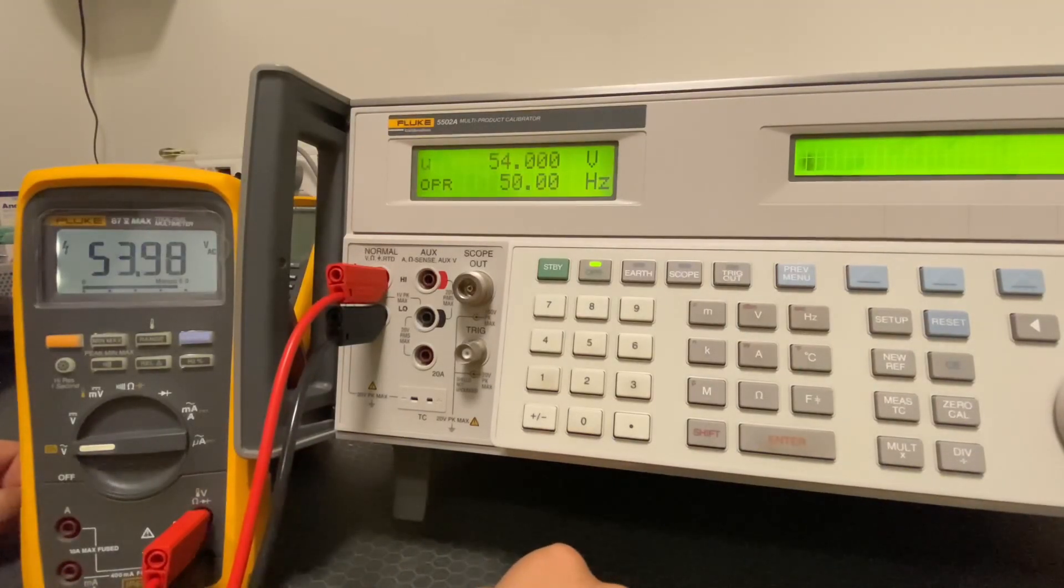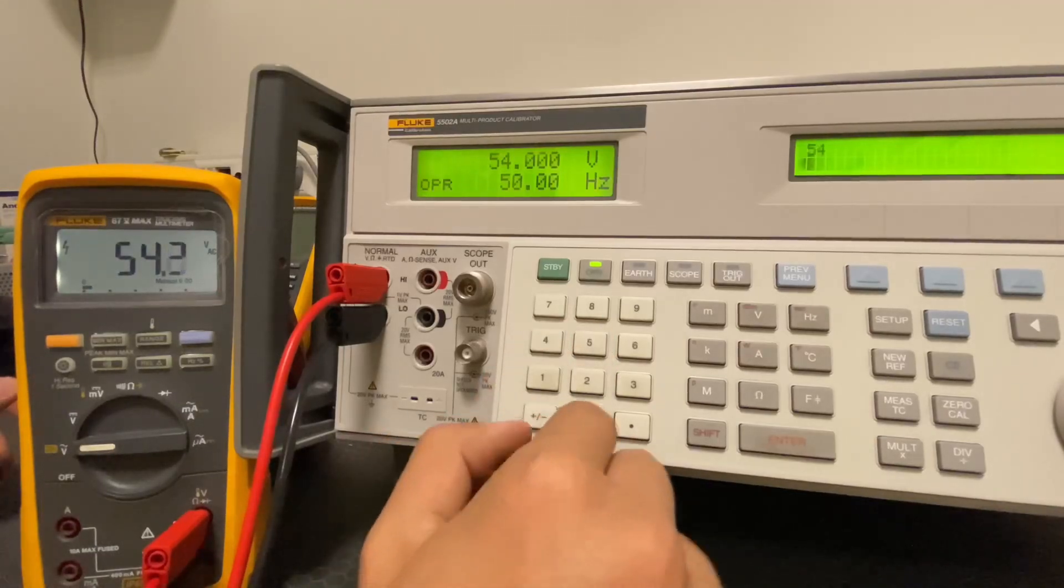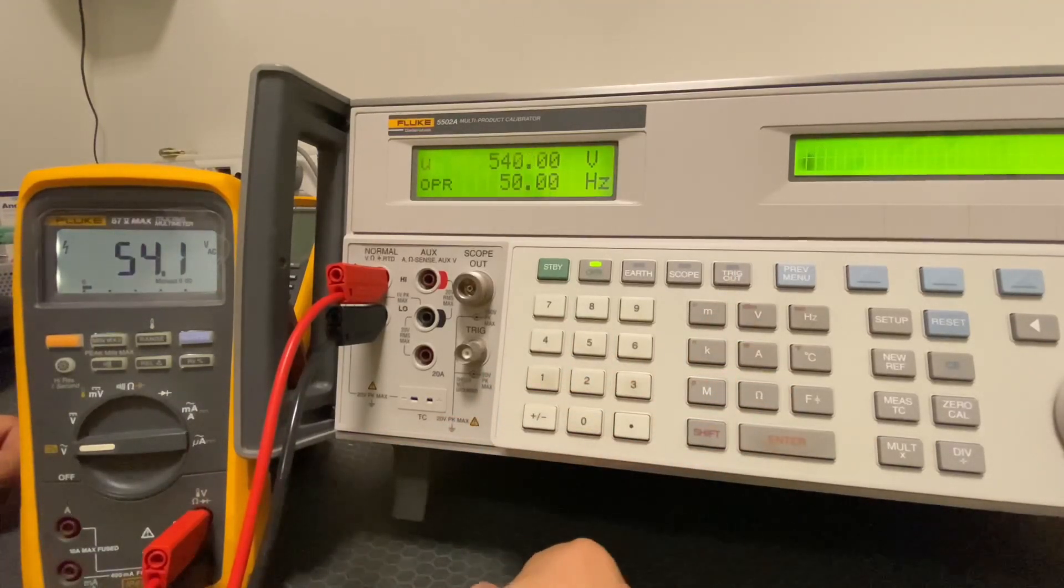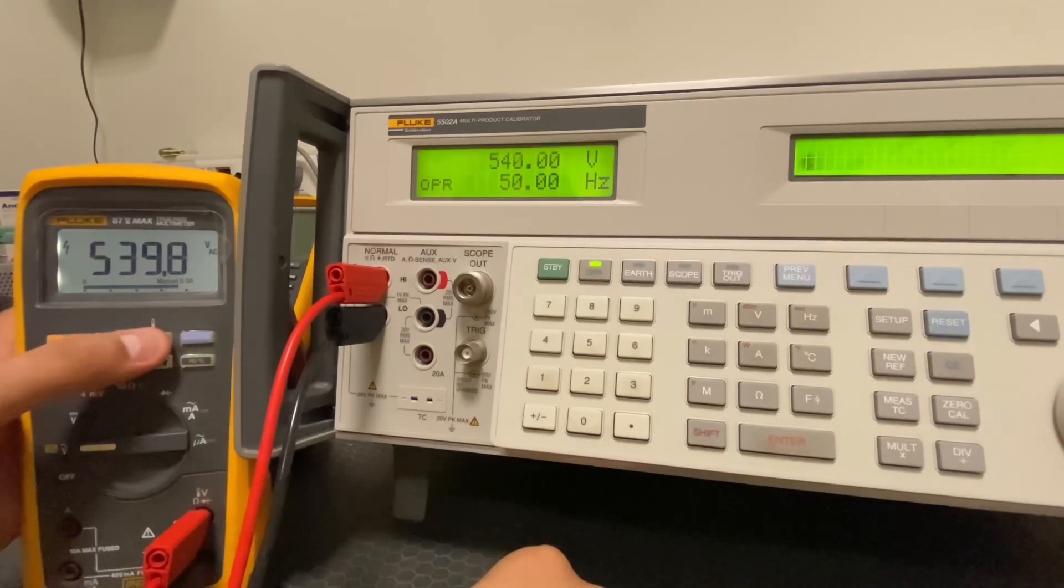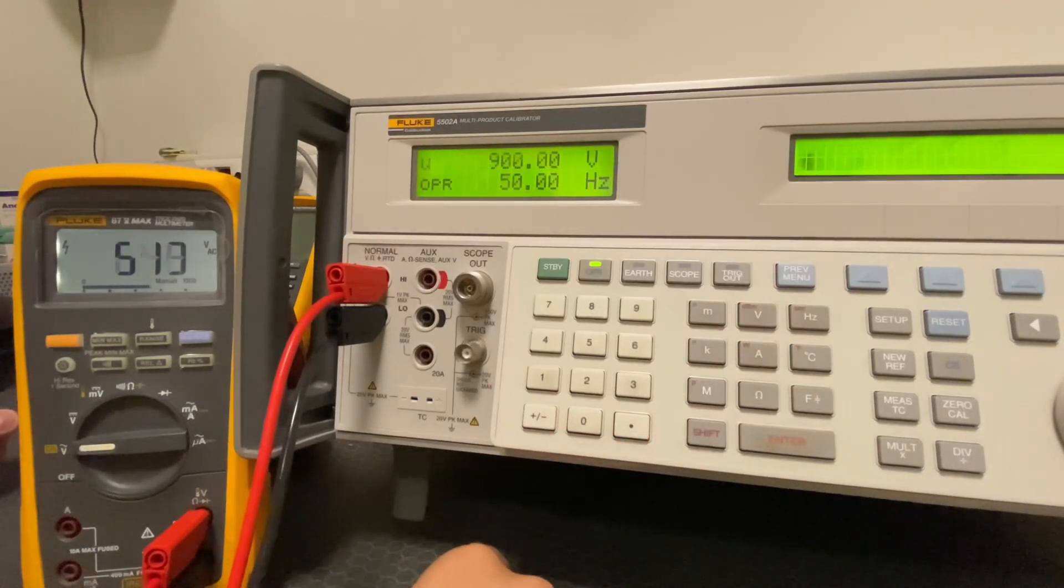Now we will check 54 volts, 540 volts, and 900 volts again in sequence. We will do this on both multimeters and complete voltage measurements. As you can see, there isn't much difference at lower voltage, but at measurements like 0.9 kilovolts a difference up to 2 volts can occur.